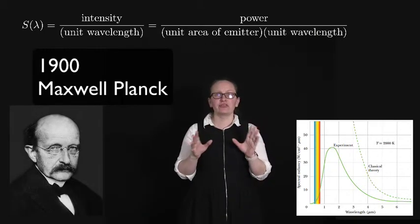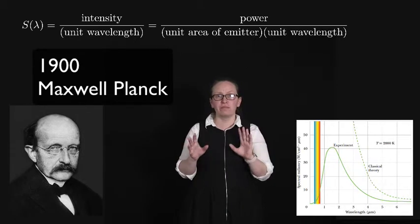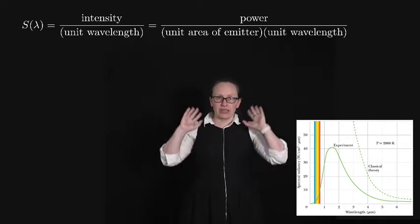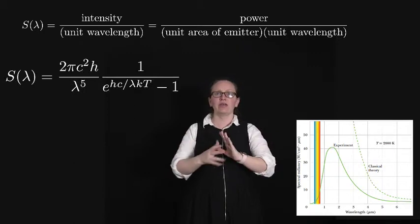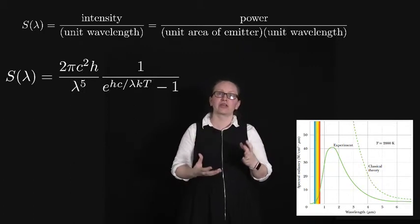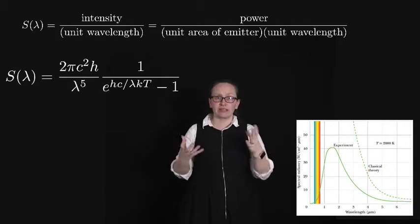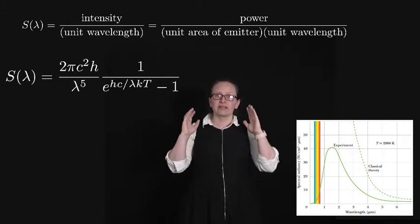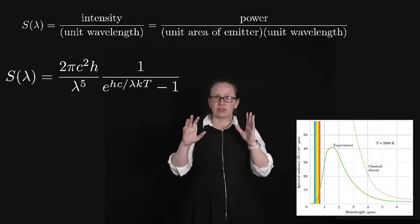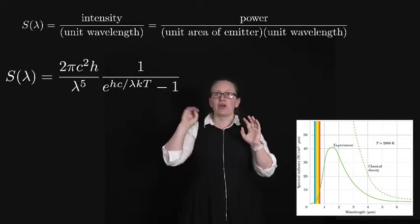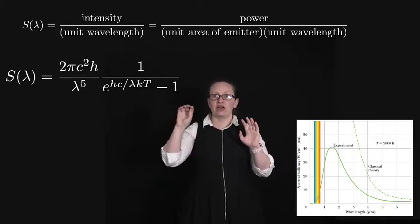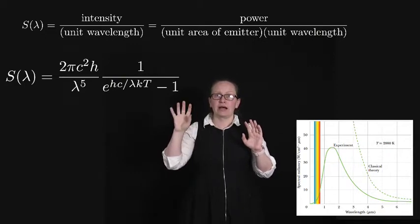In 1900 Maxwell Planck proposed a new form for the spectral radiation function. He proposed this based entirely on trying to get his function to agree with the experimental data. He suggested that it had the form S(λ) = (2πC²H/λ⁵) × 1/(e^(HC/λKT) - 1).